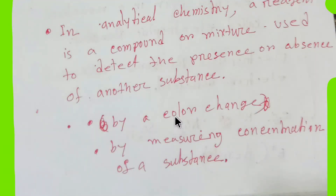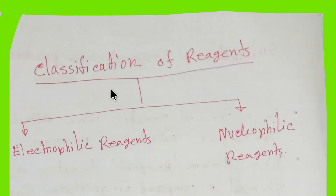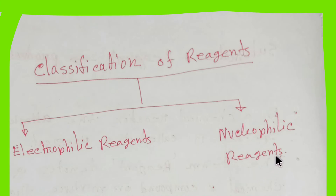Now we are going to learn the classification of reagents. Basically we have two categories: one is electrophilic reagent, another is nucleophilic reagent. The alternative name of reagent is reactant. The alternative name of electrophilic reagent is electrophile, and the alternative name of nucleophilic reagent is nucleophile.